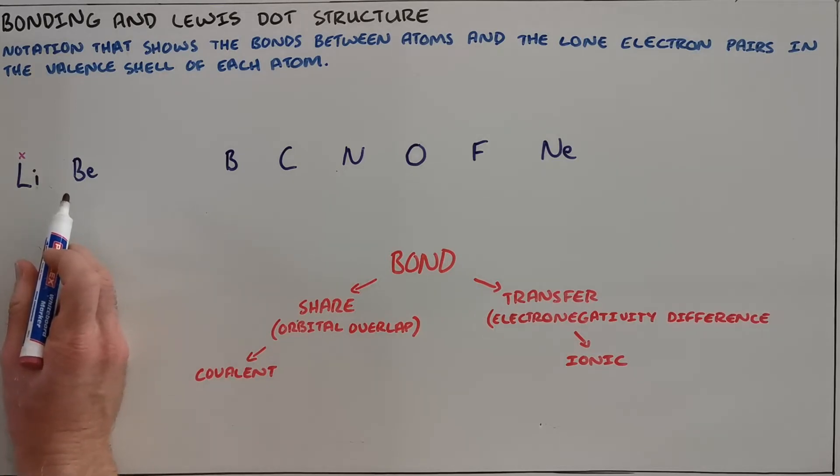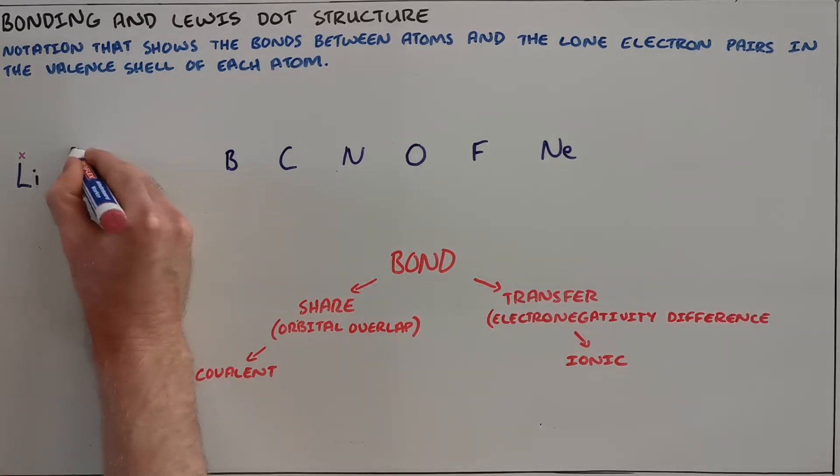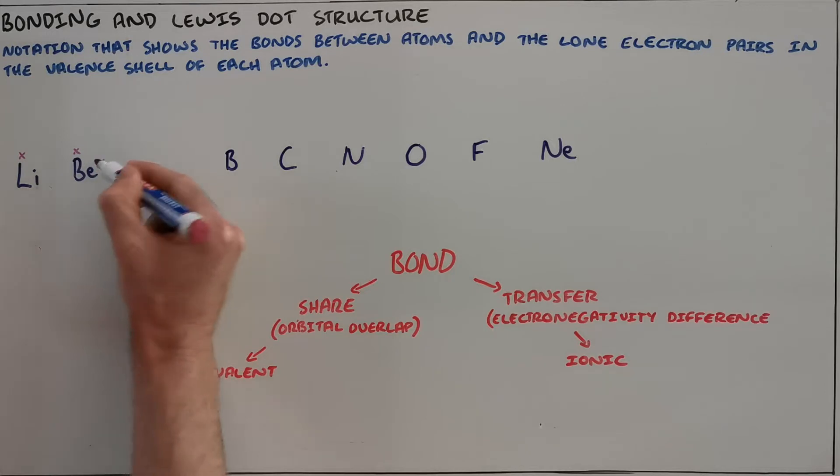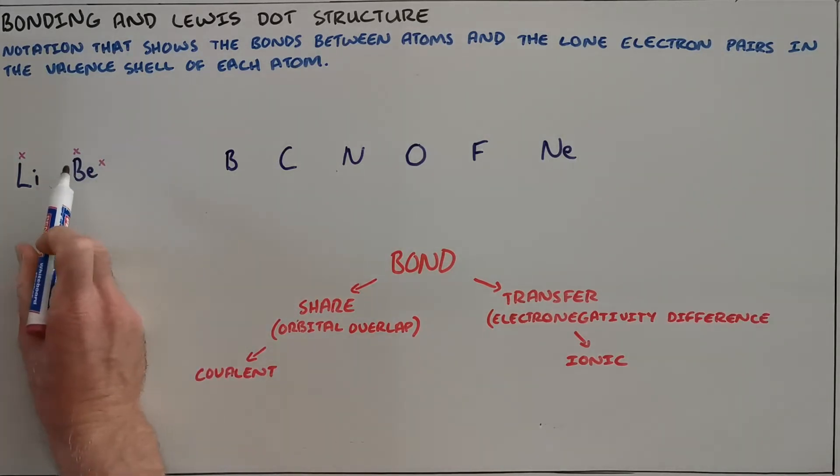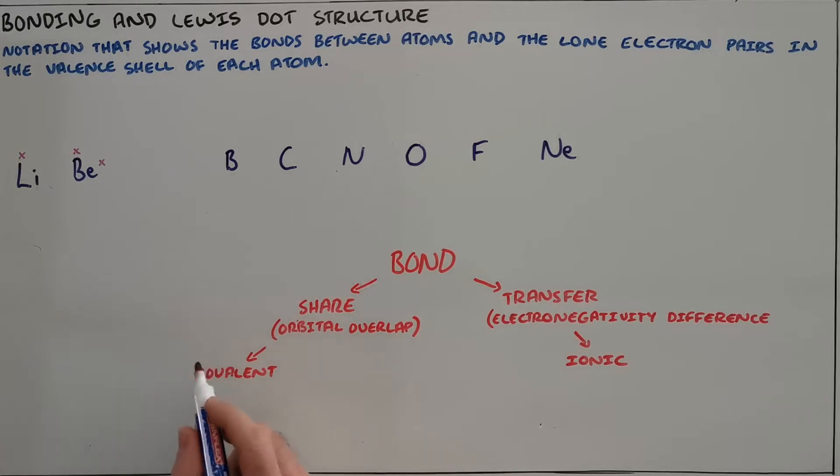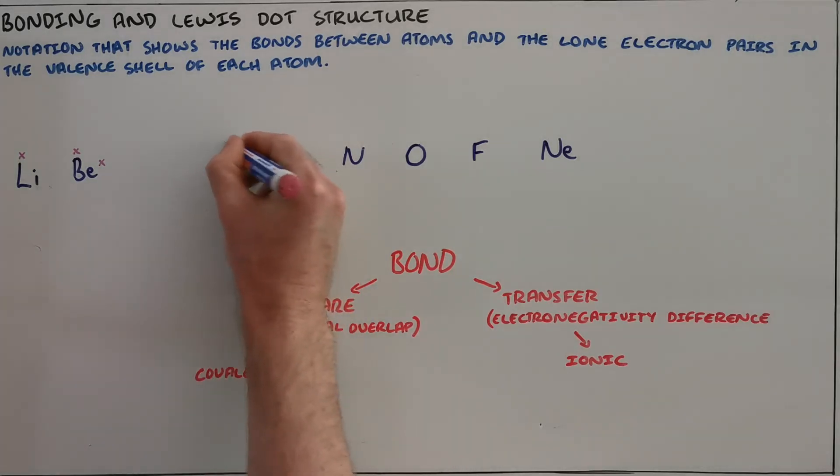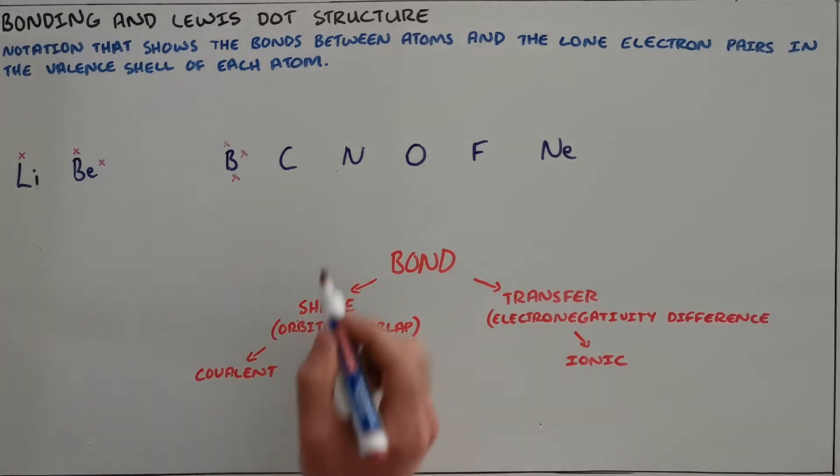Beryllium has two valence electrons because it is in group 2, and we always place the electrons in separate orbitals first because these electrons are negatively charged and therefore repel each other. Boron, being in group 13 or major group 3, would therefore have three valence electrons, again all three in separate orbitals.